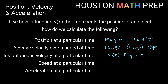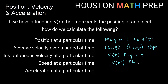Instantaneous velocity can be positive — traveling right or upward — or negative, traveling left or downward. Speed is actually the absolute value of velocity. So once we find the instantaneous velocity and plug in t, taking the absolute value of that result gives us the speed.